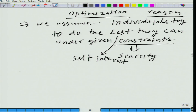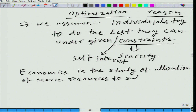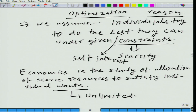Let us look at the definition of economics once again. Economics is the study of allocation of scarce resources to satisfy individual wants. The problem here is that individual wants are unlimited — there is no end to your or my wants.